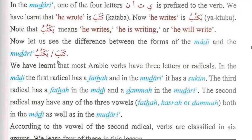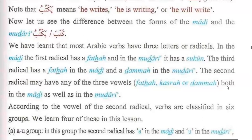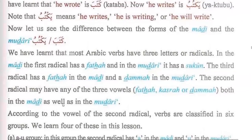Most Arabic verbs have three letters or radicals. In the madi, the first radical has a fatah, and in the mudari it has a sukun. The third radical has a fatah in the madi and a dhamma in the mudari. The second radical may have any of the three vowels — fatah, kasra, or dhamma — in the madi as well as in the mudari.